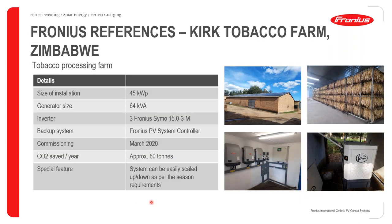A reference installation is a tobacco processing farm in Zimbabwe, using three Fronius Symo inverters, one data manager, an AJ Power 64 kVA generator, a 45 kilowatt peak PV system, and a Fronius PV system controller installed in the DB box. Commissioned in March 2020, the system saves approximately 60 tons of CO2 per year. A special feature is that the system can be easily scaled up or down according to season — the small 64 kVA generator is used in the off-season, while the main-season uses a larger setup.